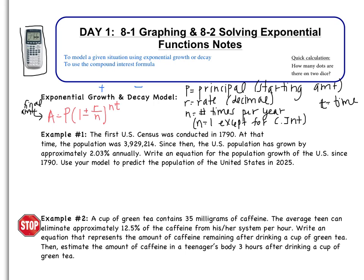So let's just look at example one. It says the first U.S. Census was conducted in 1790. At that time, the population was 3,929,214. Since then, the U.S. population has grown by approximately 2.03% annually. Write an equation for the population growth of the U.S. since 1790. Use your model to predict the population of the United States in 2025. So we're asked for two things here. First, we're asked to write an equation for the population. And then we are also asked to predict the population in 2025. So in order to predict the population, we need an equation, a model. So we're going to start by writing that model.